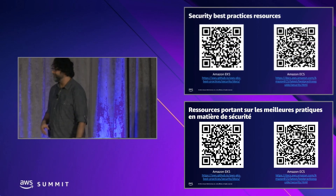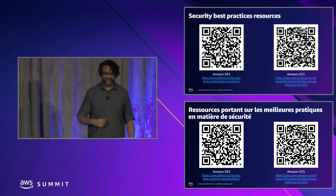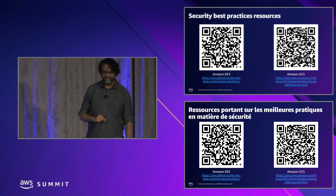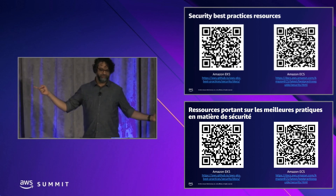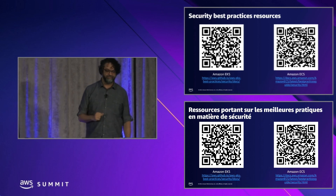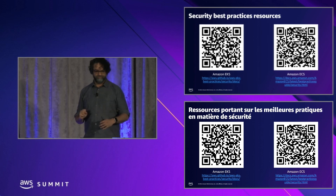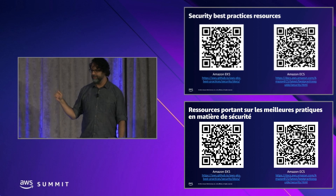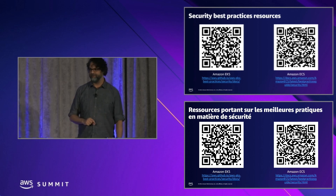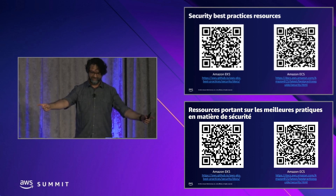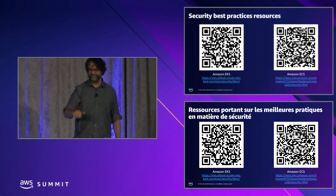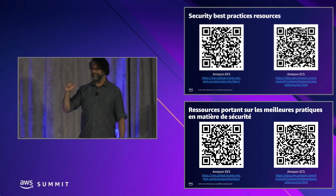That was a lot of information. Thankfully I wasn't expecting you to memorize it all. Scan the QR codes on screen — the right-hand QR code links to the EKS best practices security doc on GitHub, and the other links to the ECS security best practices doc. Do remember: do not run containers as root, and reduce, reuse, and recycle — reduce your surface area, reuse your images, and recycle your hosts and containers.